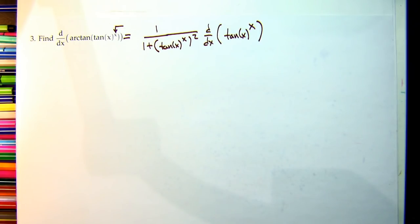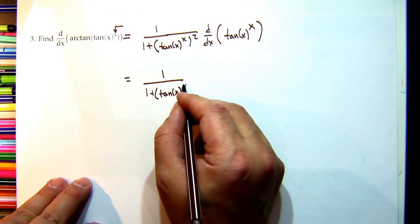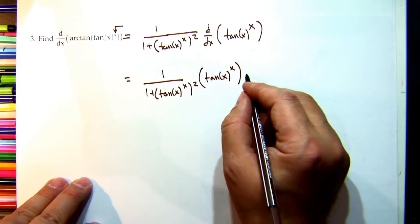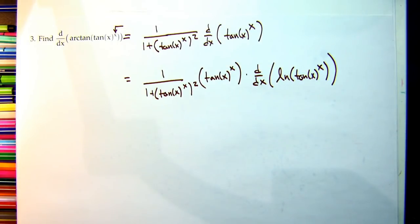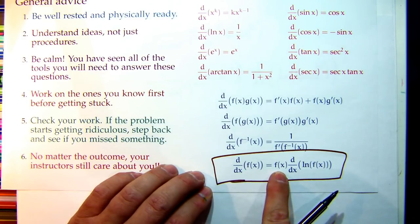Now we need the derivative of tan(x)^x. Logs bring exponents down, so use logarithmic differentiation. By the logarithmic differentiation rule, the derivative of f(x) equals f(x) times the derivative of ln(f(x)). So the derivative of tan(x)^x equals tan(x)^x times the derivative of ln(tan(x)^x) = tan(x)^x times the derivative of x·ln(tan x).